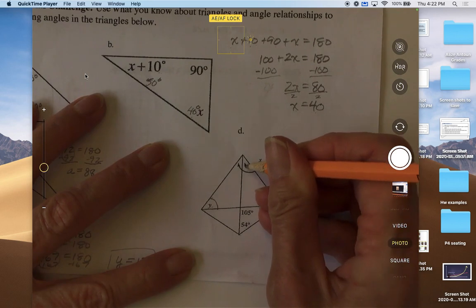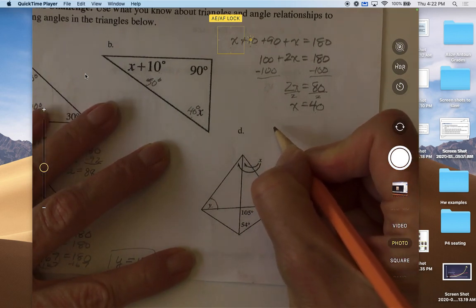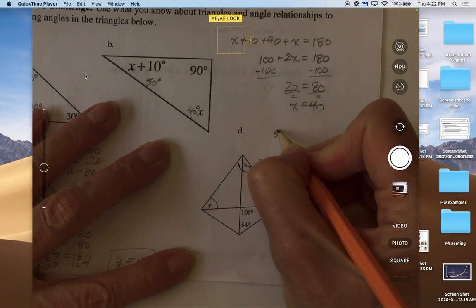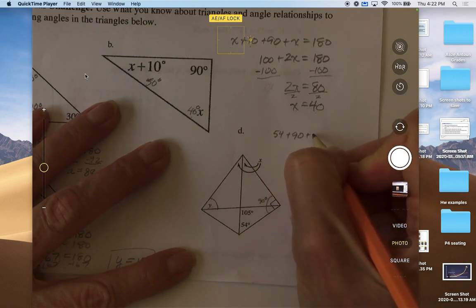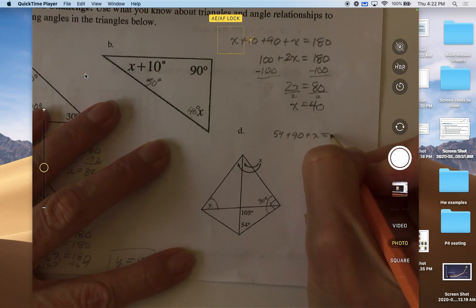Since we know these two but not this one, we can make this equation: 54 plus 90 plus x is equal to 180.